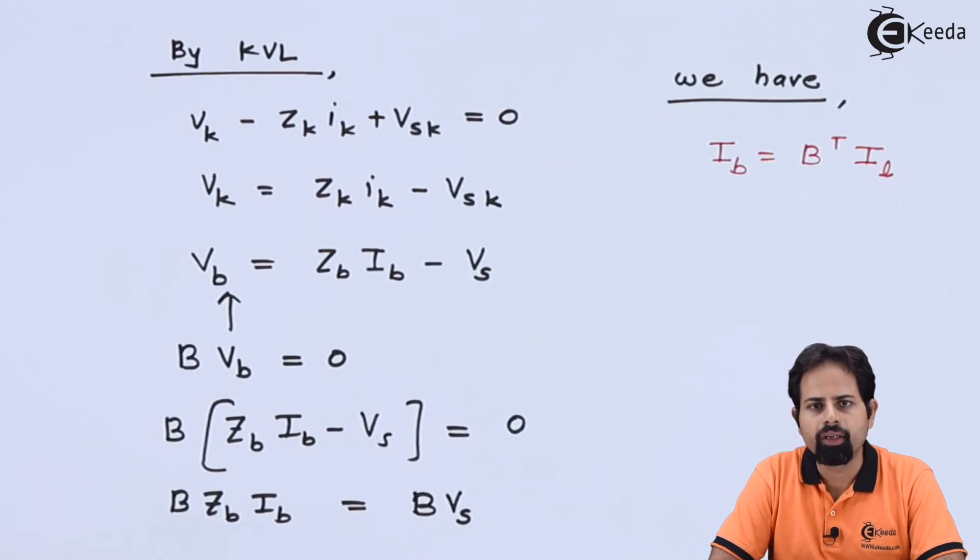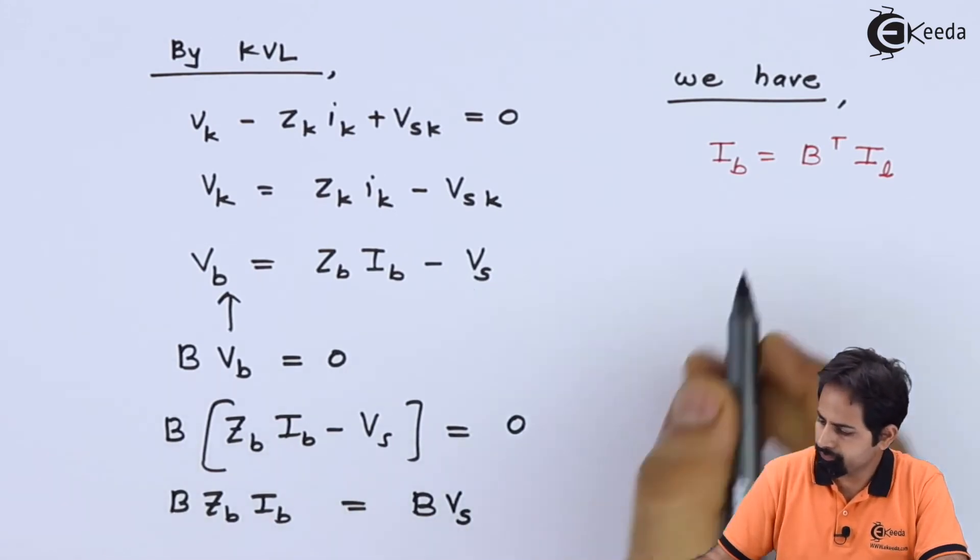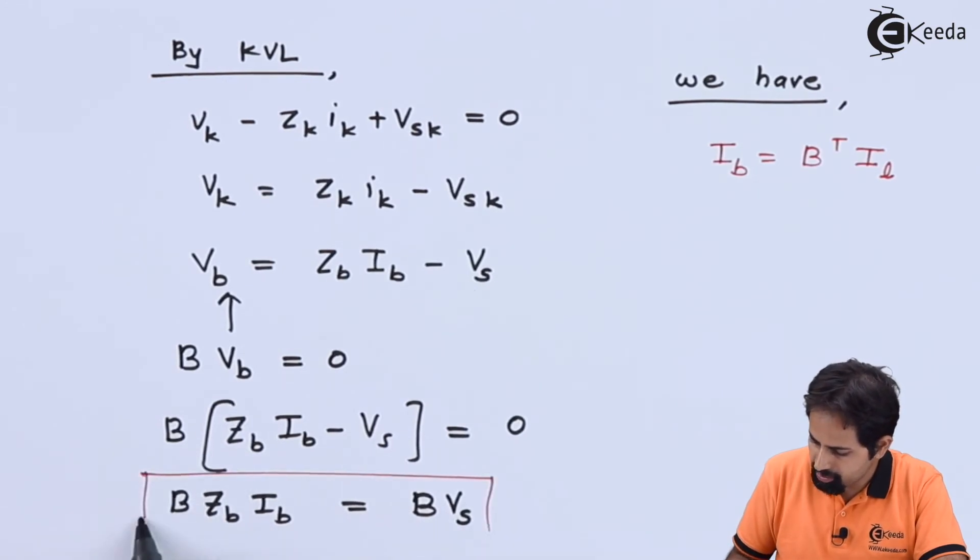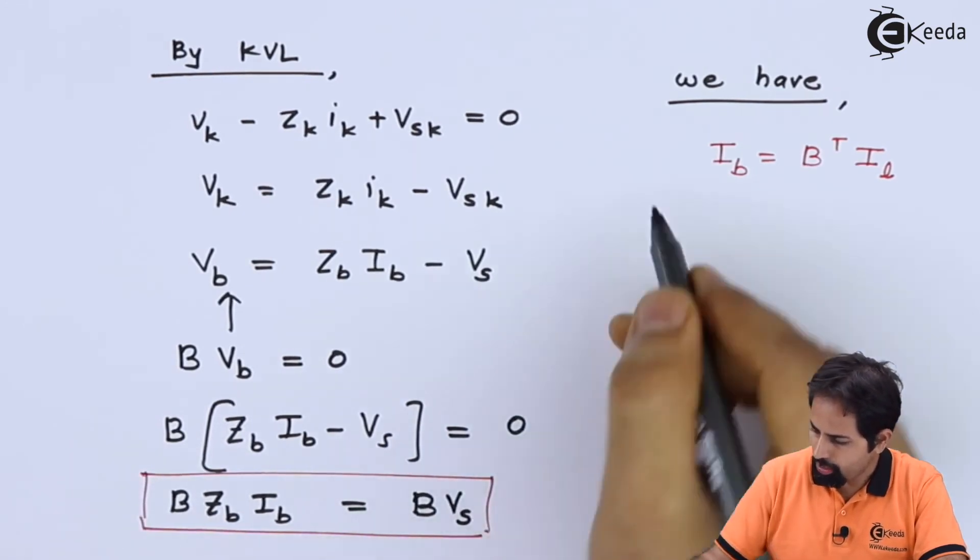As this IB can be represented in terms of B transpose and I link, this is the property which we have seen in one of the topics. So if I substitute this value here in this equation, what I will get is: